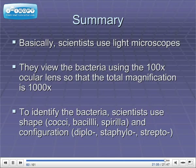To summarize everything: scientists use light microscopes and can view bacteria using the 100x ocular lens with oil immersion, so the total magnification is 1000x. To identify the bacteria, you'll be using shape — cocci, bacilli, spirilla — and configuration. Diplo can be used for cocci or bacilli: diplococci, diplobacilli. Staphylo and strepto are only used for cocci: staphylococci or streptococci.